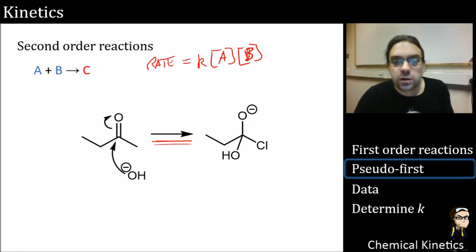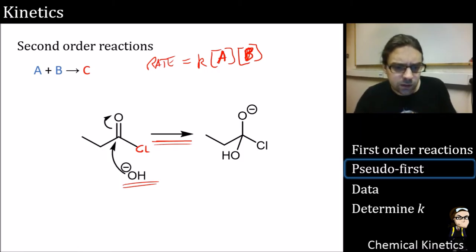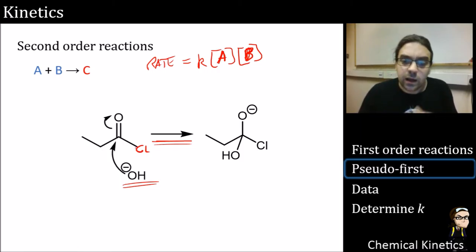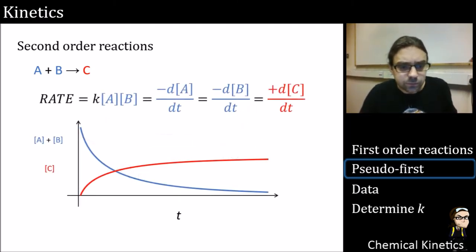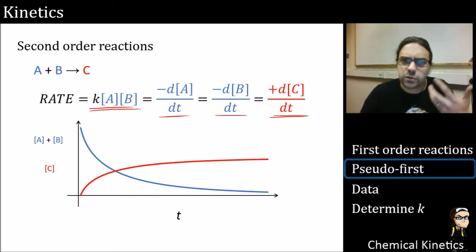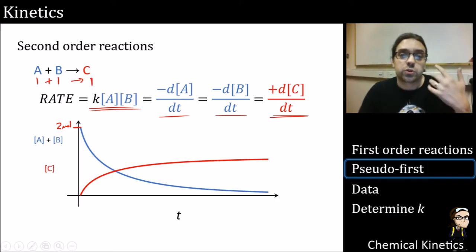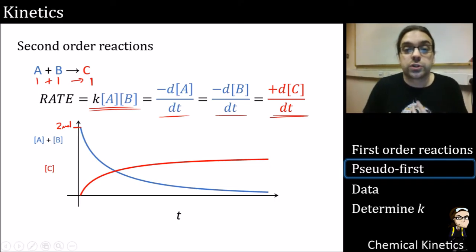For a second order reaction, two things come together, so the rate is dependent on two concentrations. For example, an OH coming in targeting a ketone group in a nucleophilic addition — that's a second order reaction. The rate is proportional to two things, and we can define that as the speed the two reactants disappear or the speed that product C appears. If we start with one mole of A and one mole of B, we get one mole of C.